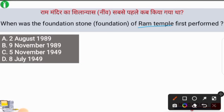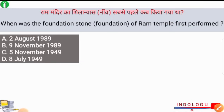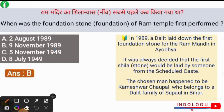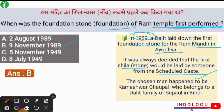When was the foundation stone of Ram Temple first performed? The correct answer is option number B, i.e. 9th of November 1989. In 1989, a Dalit laid down the first foundation stone for the Ram Mandir in Ayodhya. It was always decided that the first stone would be laid down by someone from the scheduled castes. The person chosen was Kameshwar Chawpal, who belongs to the Dalit family of Supal in Bihar, and he laid the foundation stone for the first time on 9th of November 1989.